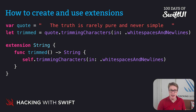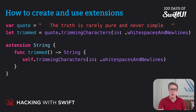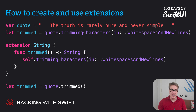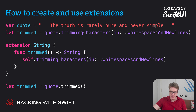Inside, we have a new method called trimmed returning a new string, calling the same code as before but now we can say self dot, and that automatically refers to the current string instance — whatever you call this trimmed method on. This is possible because we're already in our string extension. Now everywhere we want to remove whitespace and new lines, we can just write let trimmed = quote.trimmed.